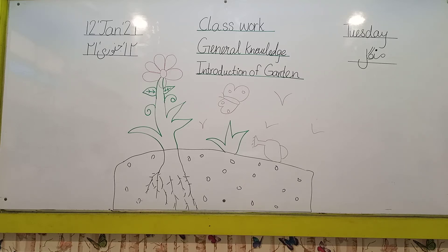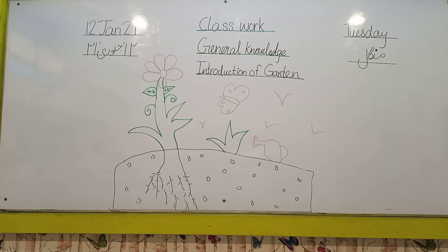If you want to practice, go to unit number three — Garden. Talk about what is the meaning of garden, how many kinds of birds are in the garden, and how many things are in the garden. Look at the picture — there are flowers, leaves, butterfly, birds, and plants. Practice the introduction of garden. Allah Hafiz, take care, see you next time.